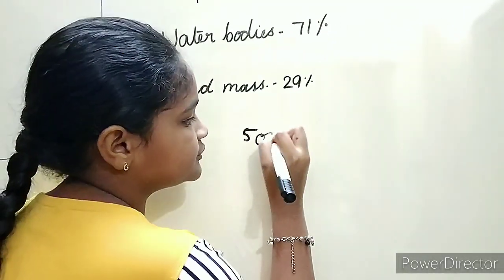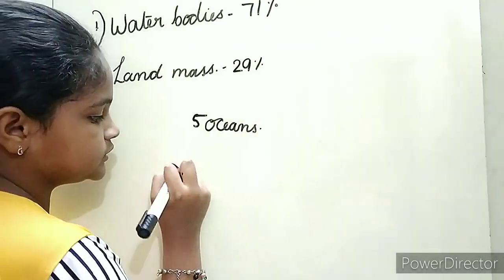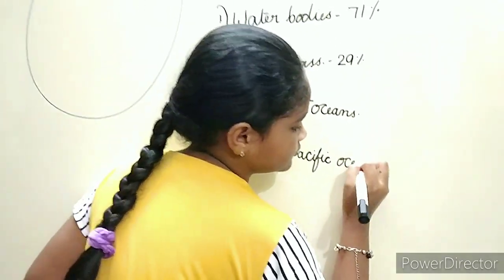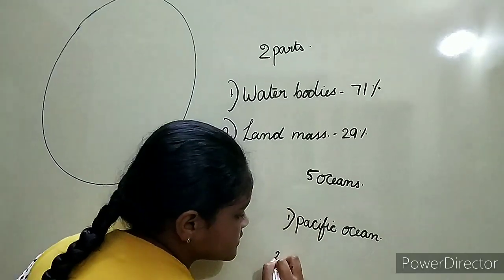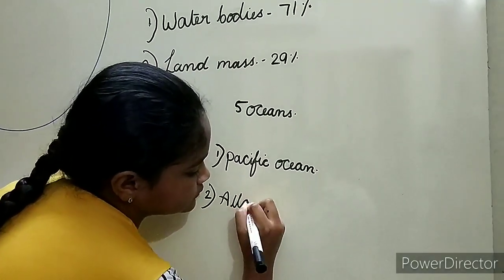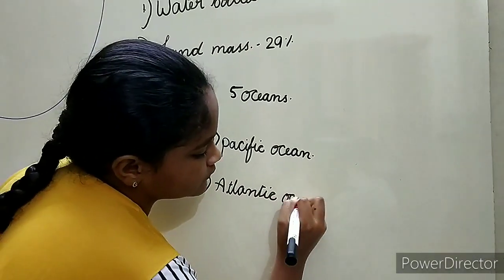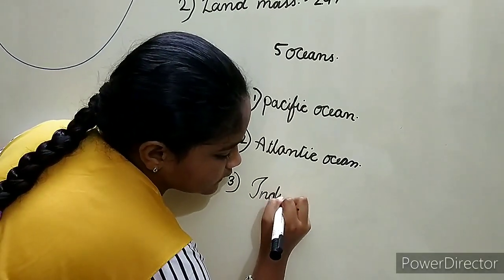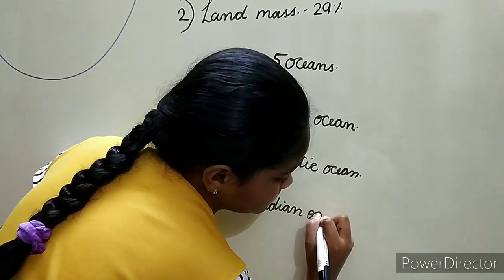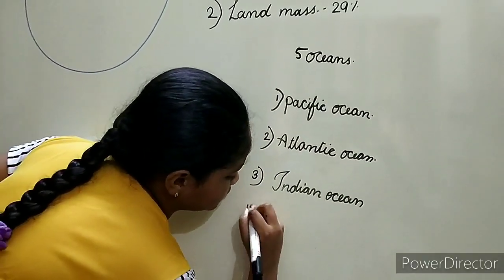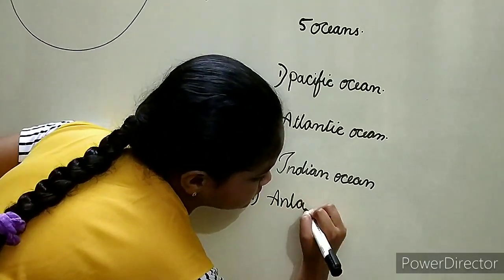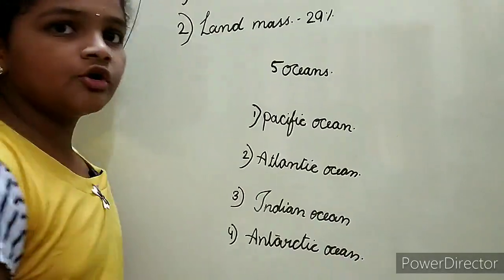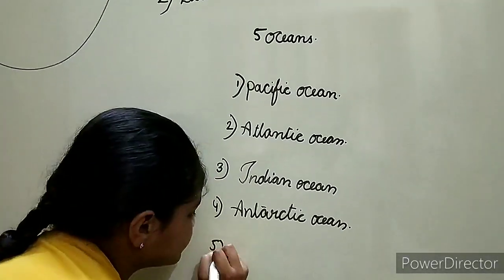Five oceans: First, Pacific Ocean. Second, Atlantic Ocean. Third, Indian Ocean — it is named after a country. Fourth, Antarctic Ocean, also known as Southern Ocean. Fifth, Arctic Ocean.